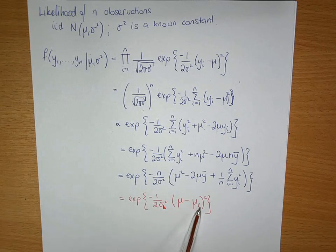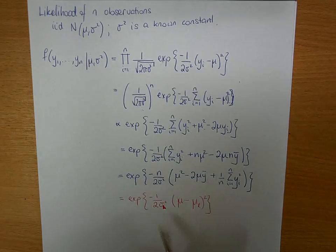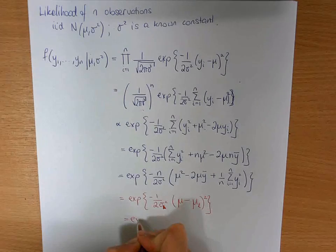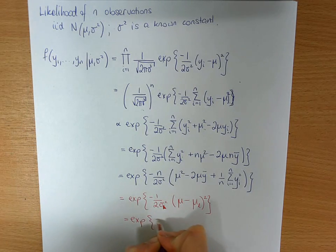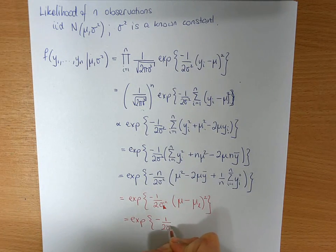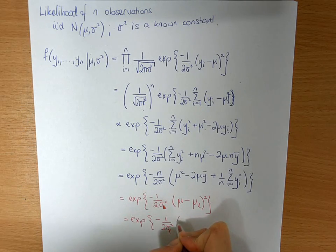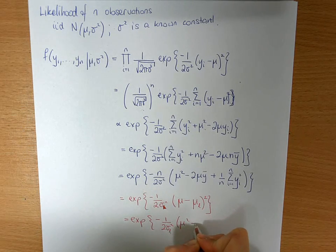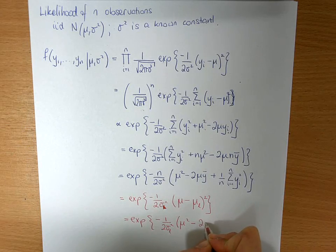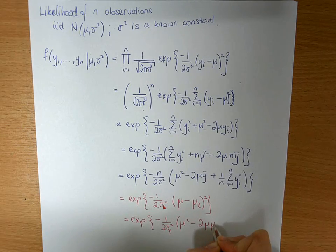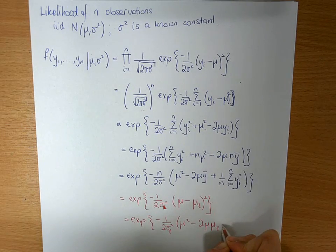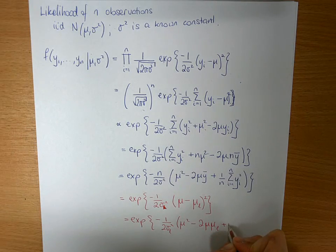So how do we track down what mu l is here? Well, we would expand it by expanding out this square. We get exponential minus 1 over 2 sigma l squared, mu squared minus 2 mu mu l plus mu l squared.